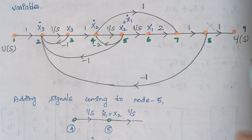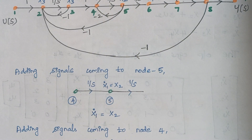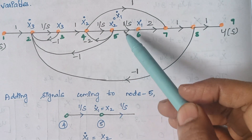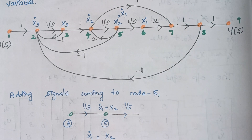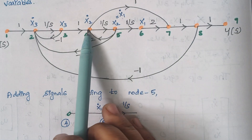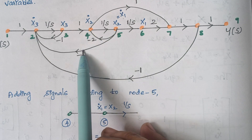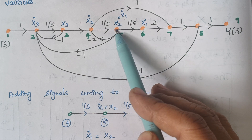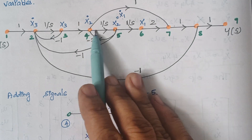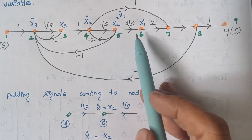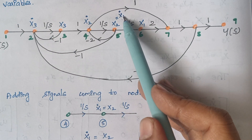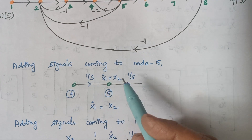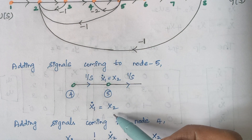After framing the state variables, we have to add the signals coming to specific nodes. At node 5, we are having X1 dot. So we are adding signals which are available at node 5. We only consider signals moving towards a node, not moving away. Here we are having 1/S and again 1/S. This node represents X1 dot, which is equal to X2. So from this, we conclude that X1 dot is equal to X2.